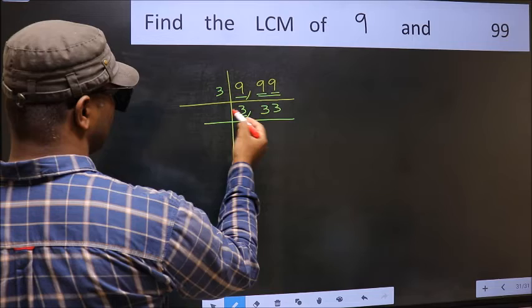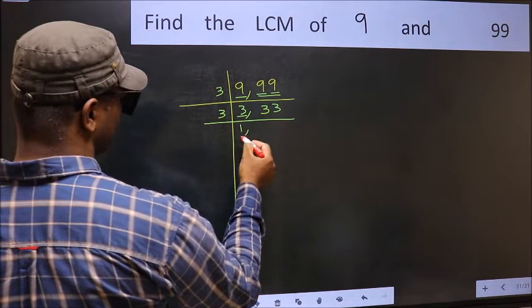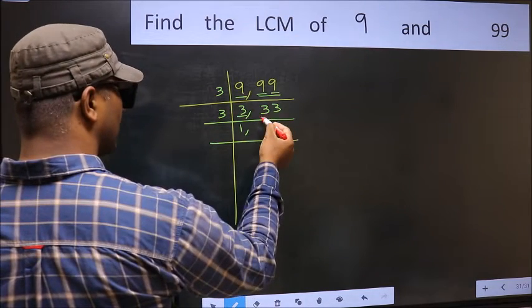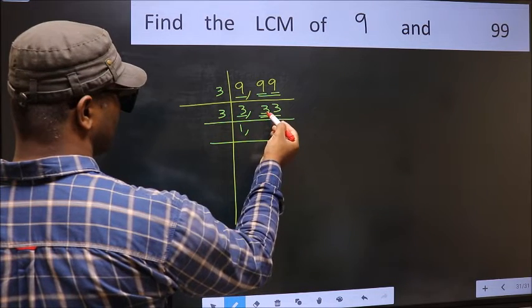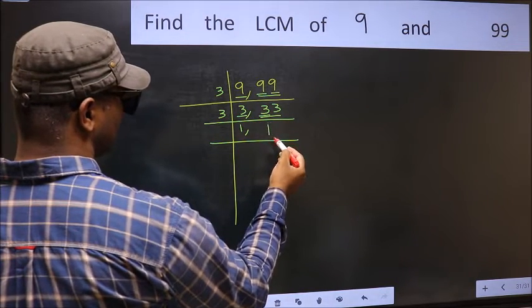Now we have 3. 3 is a prime number, so 3×1 is 3. The other number 33 is divisible by 3. When do we get 3 in the 3 table? 3×1 is 3.